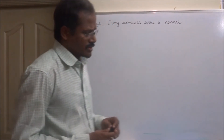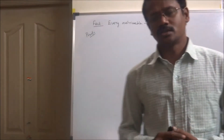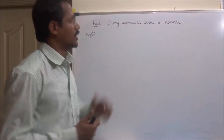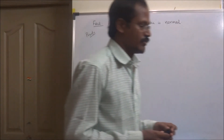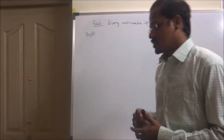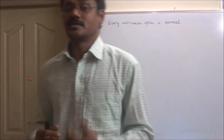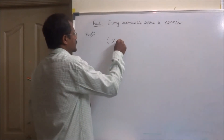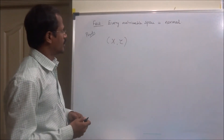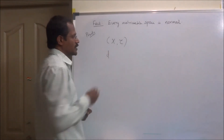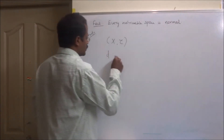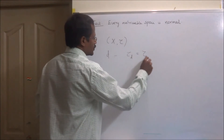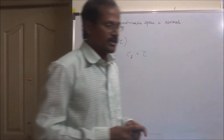This will give a lot of examples for a space to be normal — that is, whatever you have learned as a metrizable space now becomes a normal space with respect to the metric topology. A topological space (X, τ) is said to be metrizable if there is a metric d on X such that the metric topology induced by d equals τ.